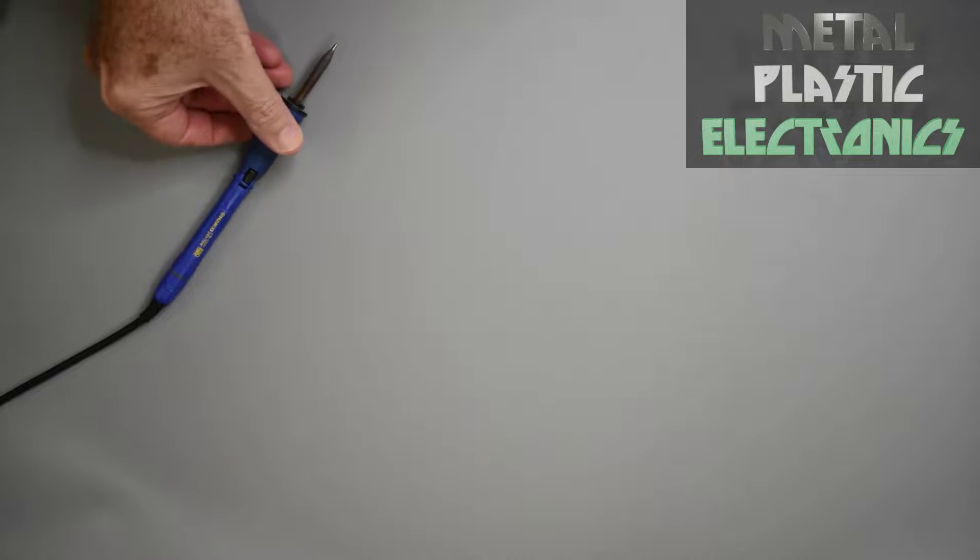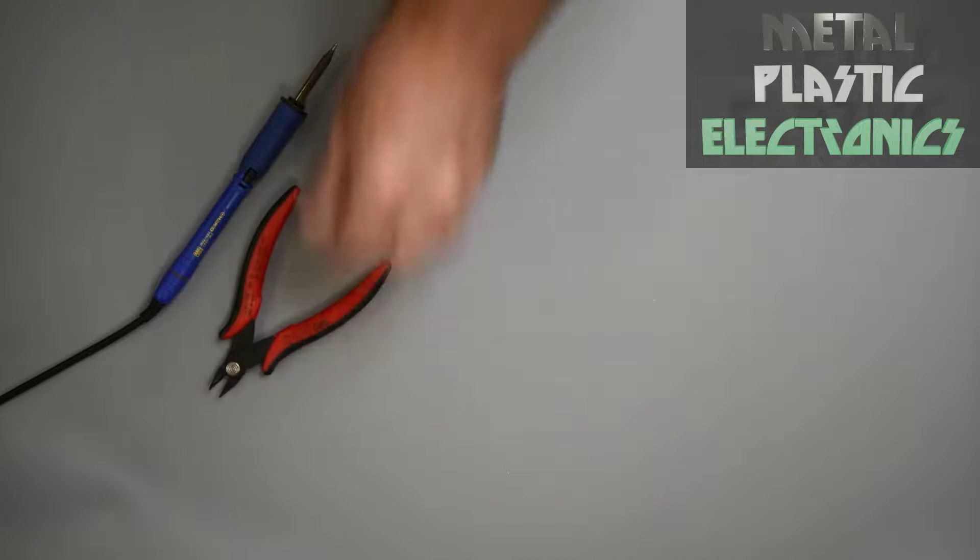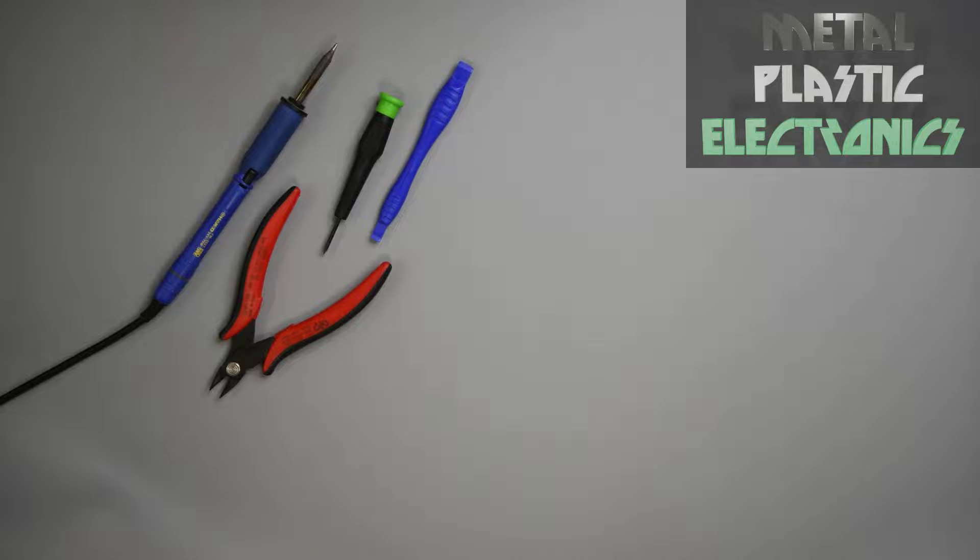You will want a temperature controlled soldering iron, a pair of small side cutters, a small Phillips screwdriver, size 0 or 00 - either seems to work - and a tiny plastic pry bar, also known as a spudger.